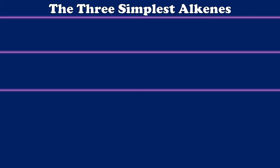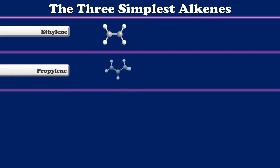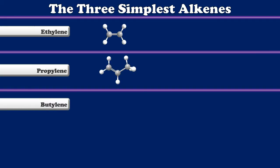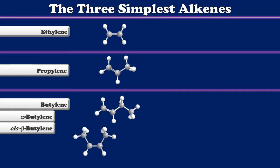Let's begin by looking at the three simplest alkenes, or hydrocarbons containing a double bond. The simplest of all is ethylene, sometimes also called ethene. In this compound, we have two carbons joined by a double bond and otherwise saturated with hydrogens. Adding an additional carbon gives us propylene. Adding one more gives us butylene, which actually has several structural isomers — the first of which is alpha-butylene, where the double bond is at the end of the molecule, and the second is beta-butylene, where the double bond is in the middle.